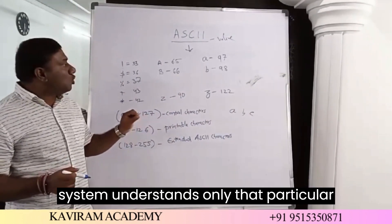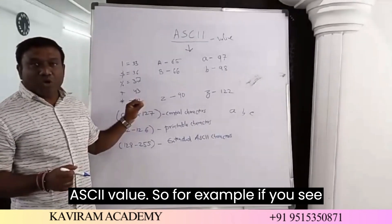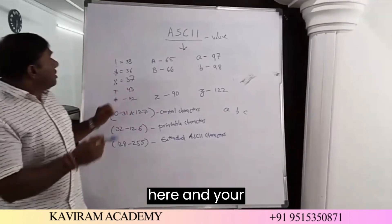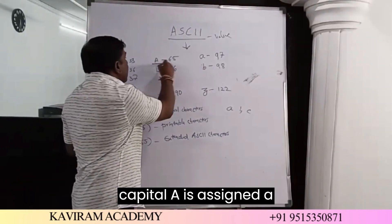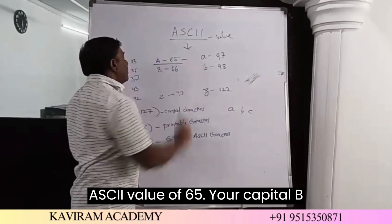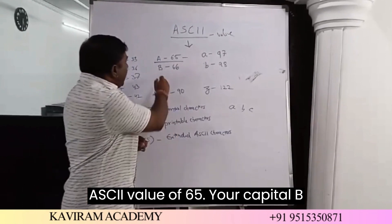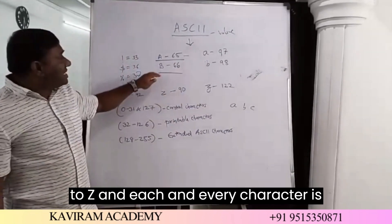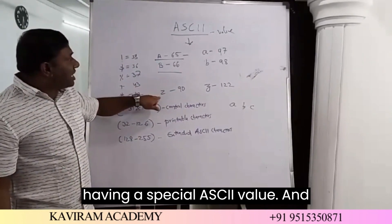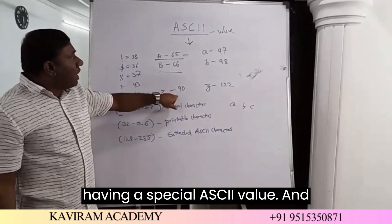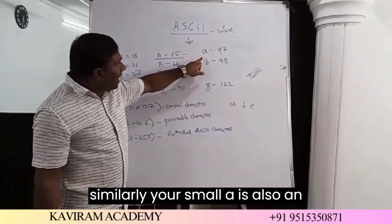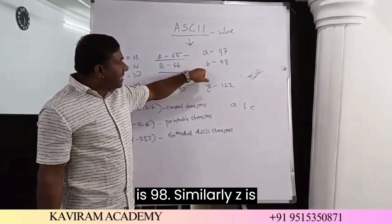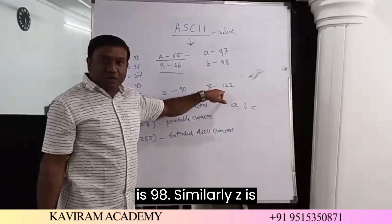The system understands only that particular ASCII value. For example, capital A is assigned an ASCII value of 65. Capital B is assigned a value of 66, similarly up to Z — each and every character has a special ASCII value. Similarly, small a is also assigned an ASCII value of 97. Small b is 98, and similarly z is 122.